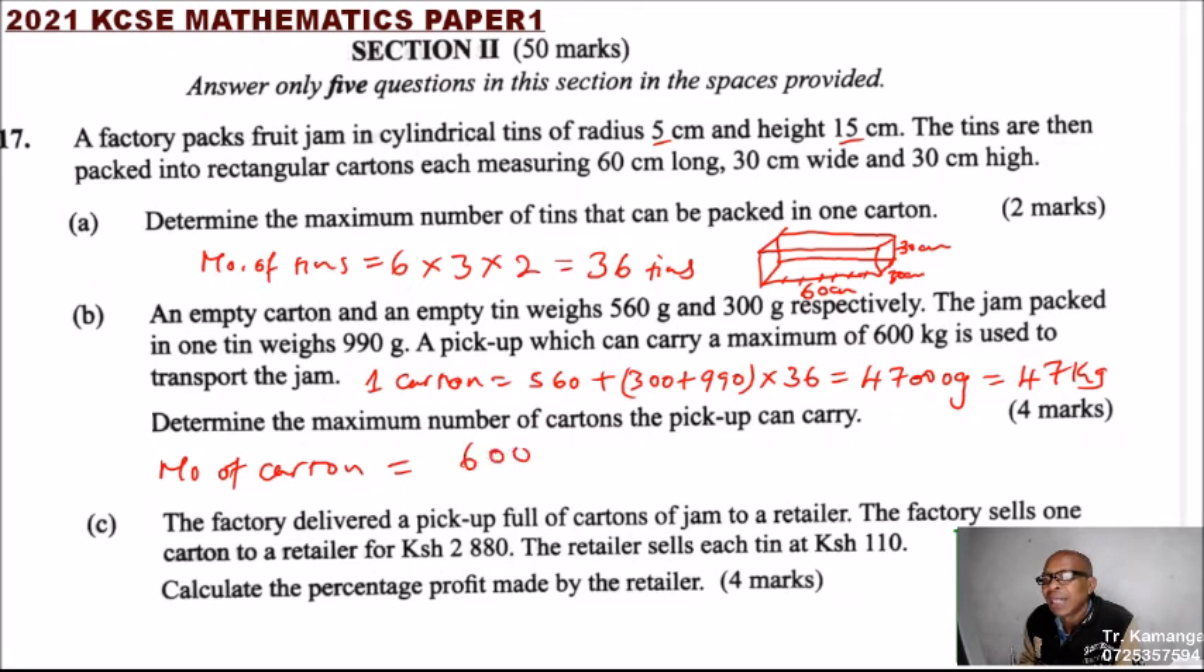Which in terms of kilograms, equals 47 kg—you divide by a thousand. So because the pickup can carry 600 kg, you say the number of cartons that the pickup can carry is 600 kg divided by 47 kg. That is the weight of one carton. So if you divide 600 by 47, you'll get 12.765954...